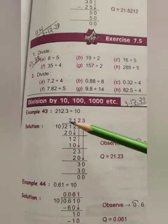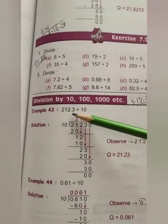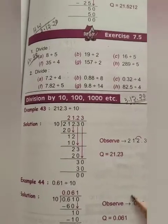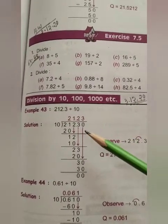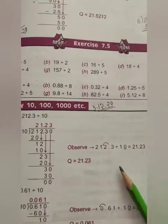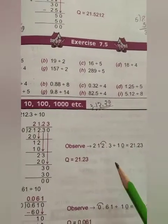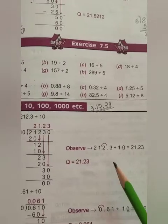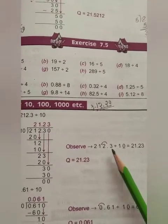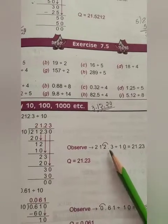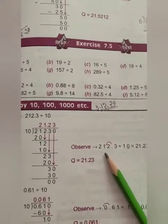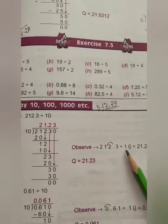If we divide this decimal number with 10, see the result, we get 21.23. Children, here you mark, if we divide by 10 any number, then the decimal point is moved to left side by one place. Because here one zero is there.